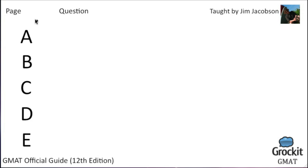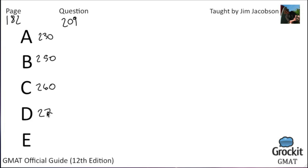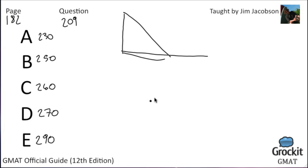Page 182, number 209. Answer choices: 230, 250, 260, 270, 290. In the figure above, if z = 50, then x + y equals what? We have a figure — let me draw it. We have angle z, angle y, and angle x, with two right angles in the diagram.